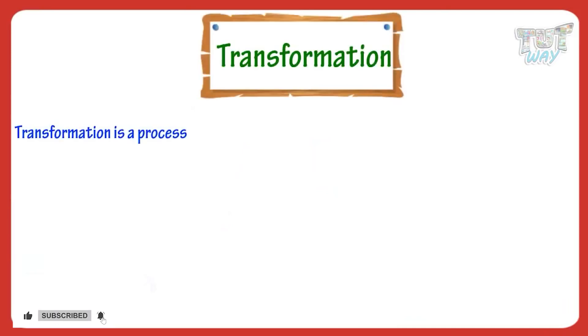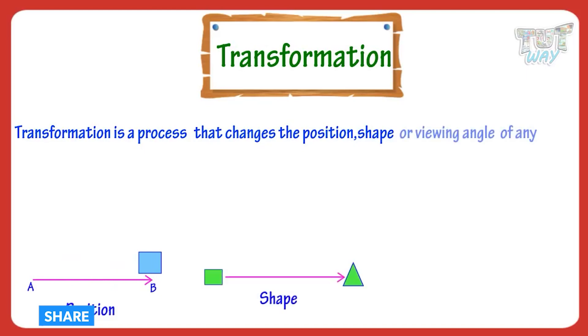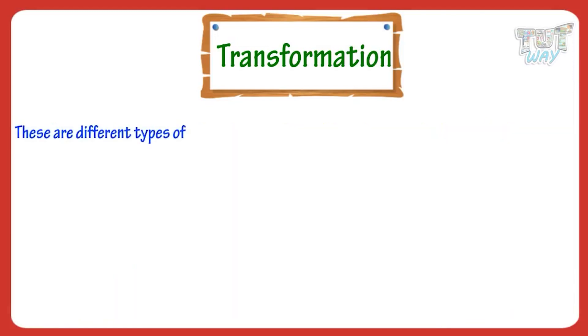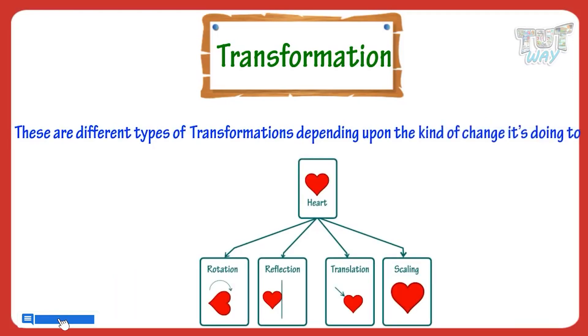First of all, we know that transformation is any process which changes the position, shape, or viewing angle of any shape. There are different types of transformation depending upon the kind of change it's doing to the 2D shape.